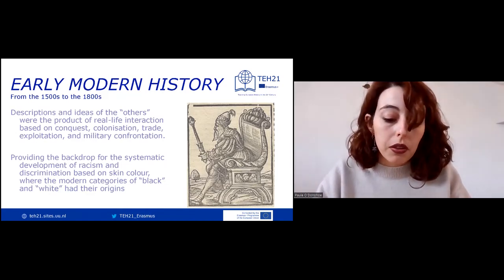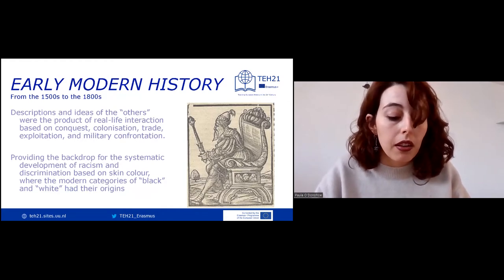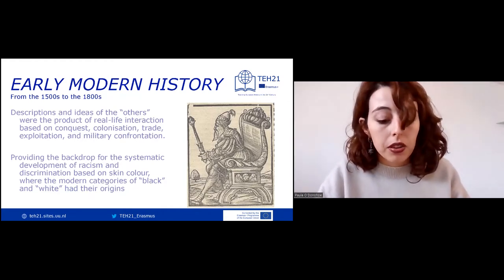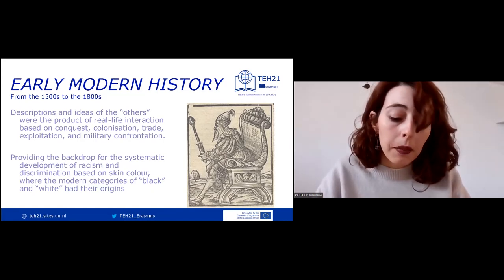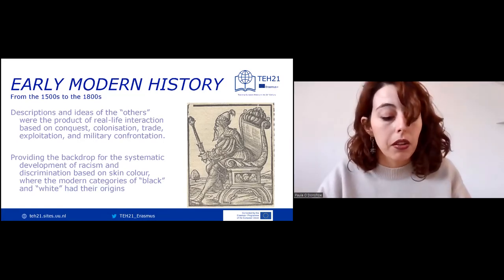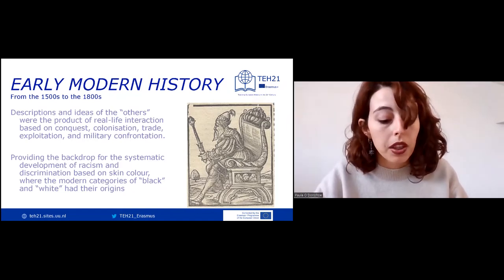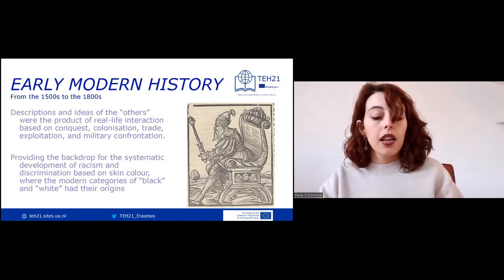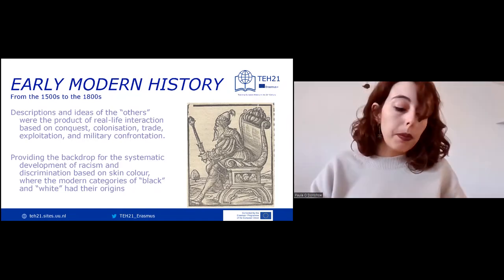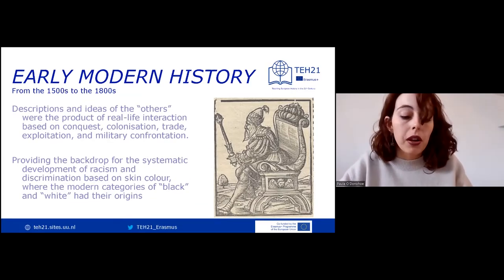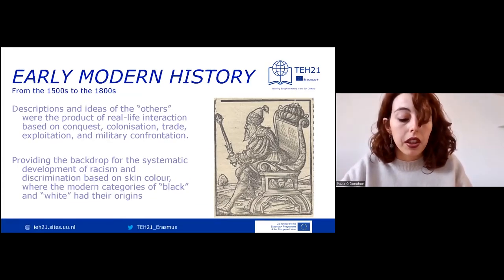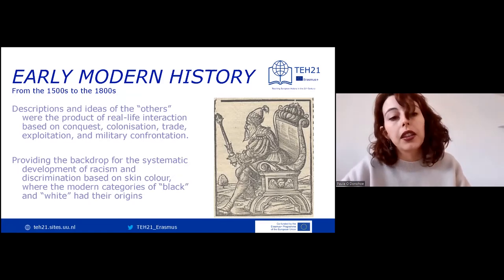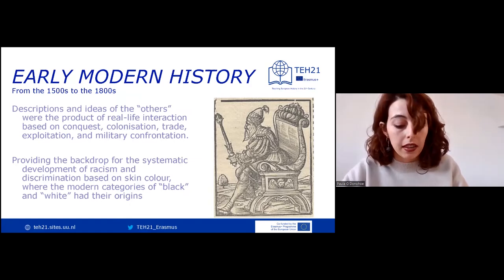In numerous parts of the world, particularly in the Americas and through the enslavement of African populations, the European disruption was substantial and lethal. The American population was decimated by Eurasian diseases such as smallpox and measles, and partly to replace these population losses, around 8.6 million enslaved people from different parts of the African continent were forced to work on plantations in the Americas between the 1500s and the 1800s.